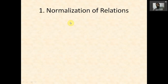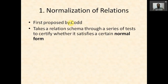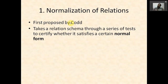Normalization of relations was first proposed by Codd in 1972. It takes a relational schema through a series of tests to certify whether it satisfies certain normal form conditions. If a table satisfies certain conditions, we say it is in first normal form; if it satisfies other conditions, it is in second or third normal form. We conduct tests on the relations or tables.